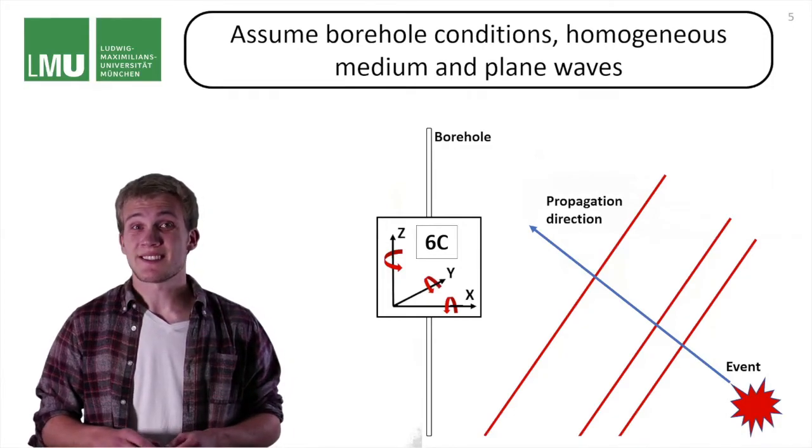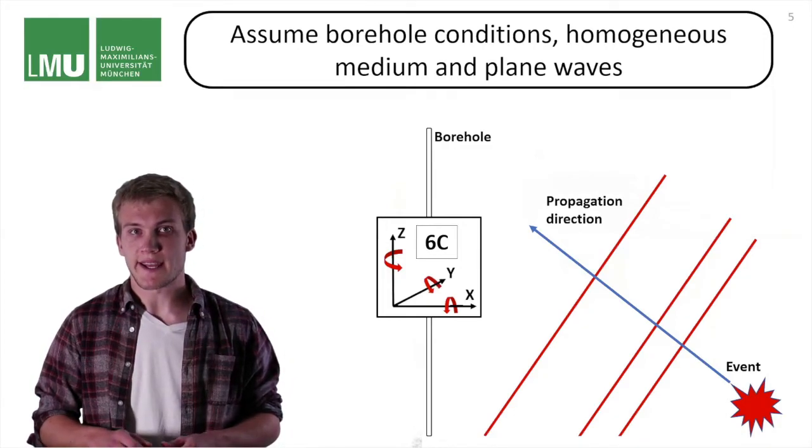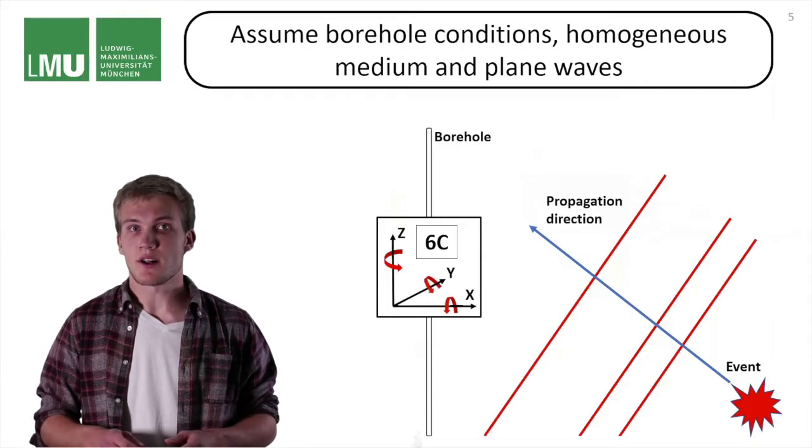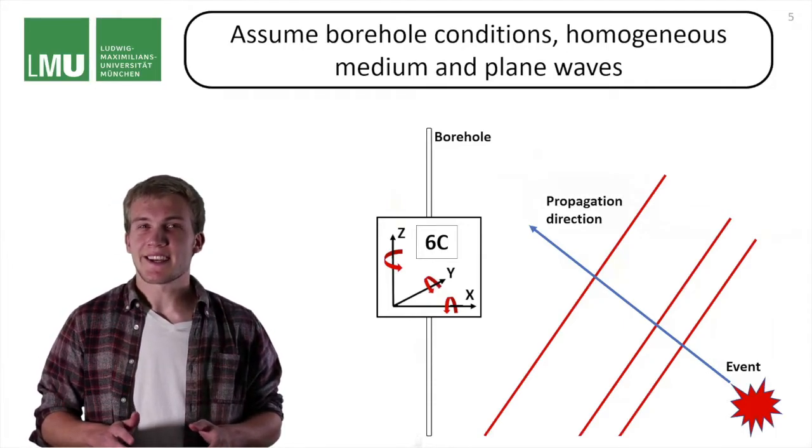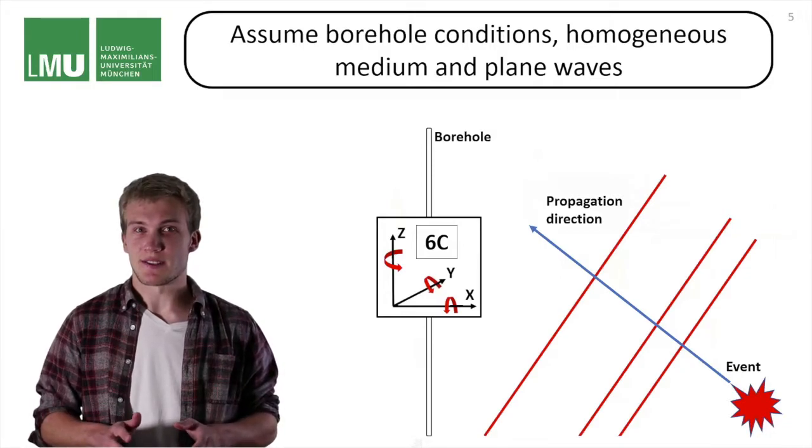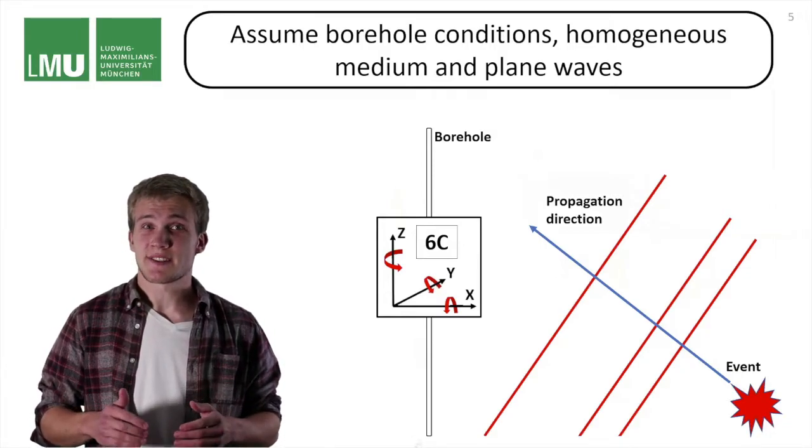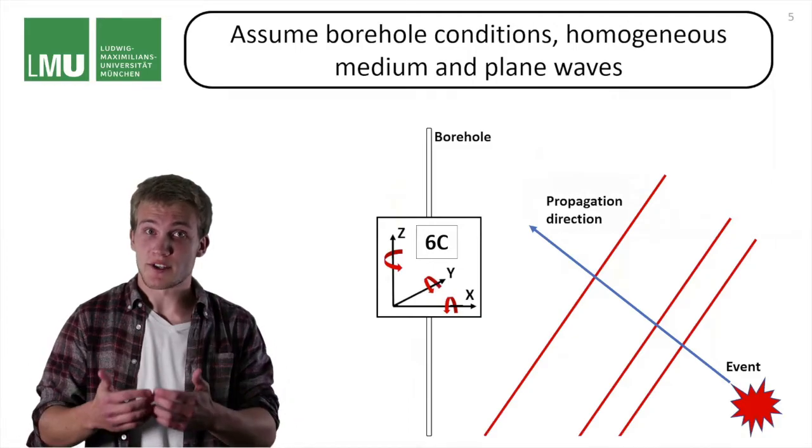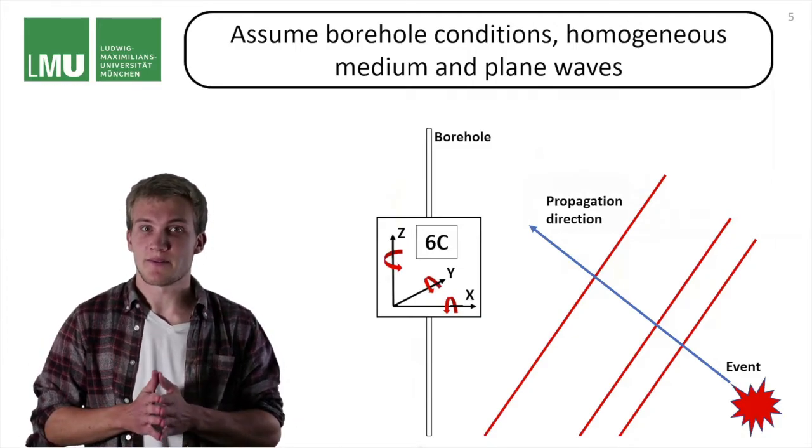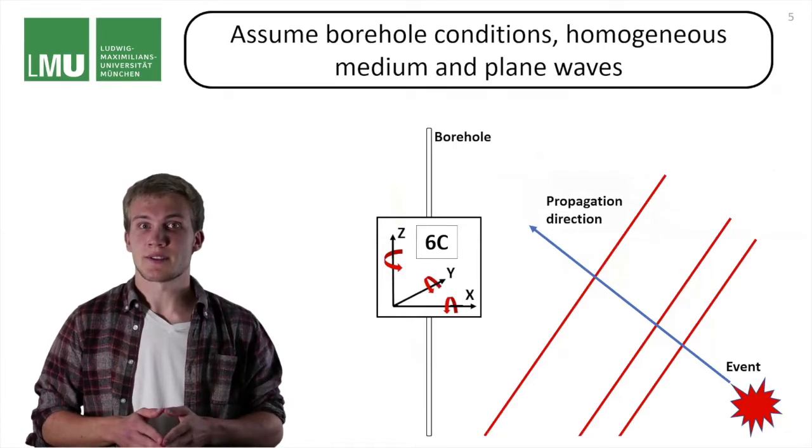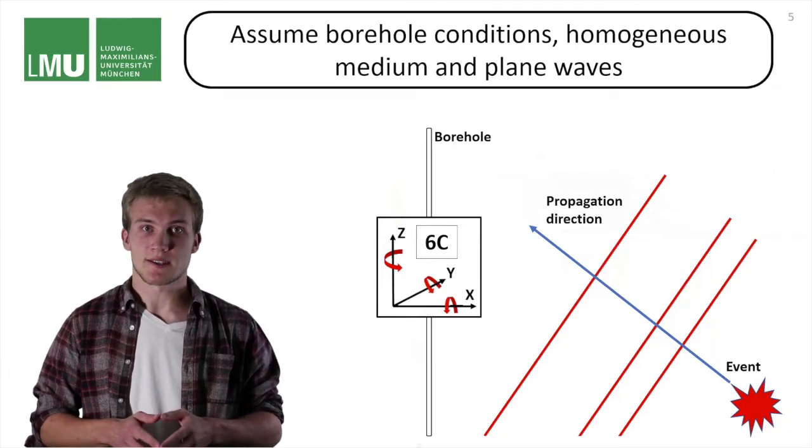Under these conditions it is valid to assume that the propagation direction is constant for all body wave phases. You can already see that we are taking up a ton of simplifications here. However, this is the first step into the inversion for an elastic tensor, and therefore we need to look at these very simple scenarios before we can adapt more realistic scenarios.